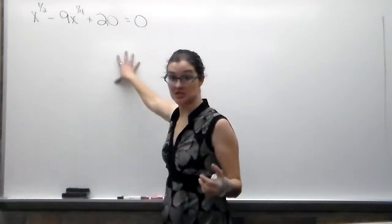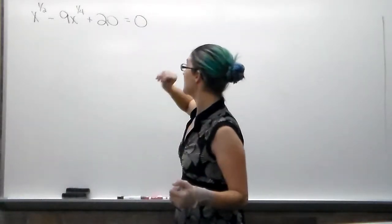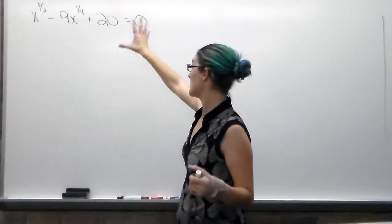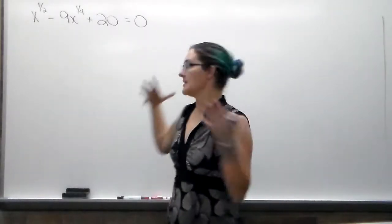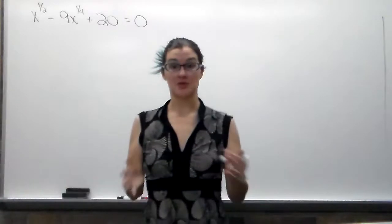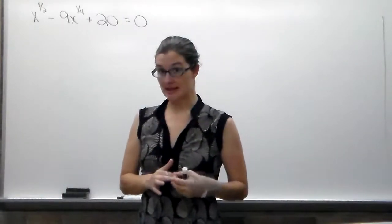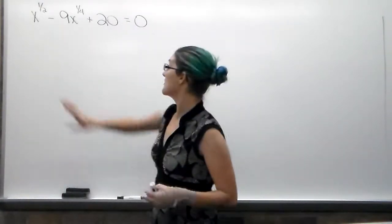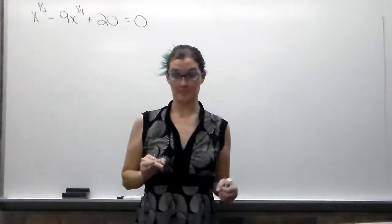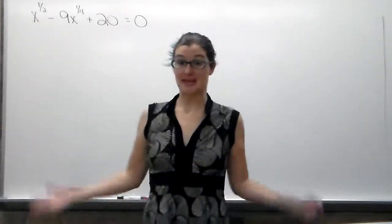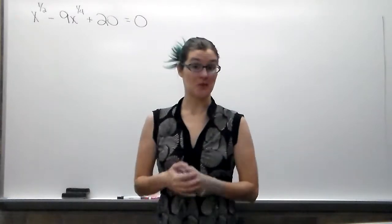Hey guys, today I want to do u-substitution. So what we're going to do here is we want to end up either factoring this or doing quadratic formula in order to solve it and find the zeros. The problem with quadratic formula is you can only use it if the highest exponent is a 2. Our highest exponent contains a 2, but it is not 2, it's 1 half.